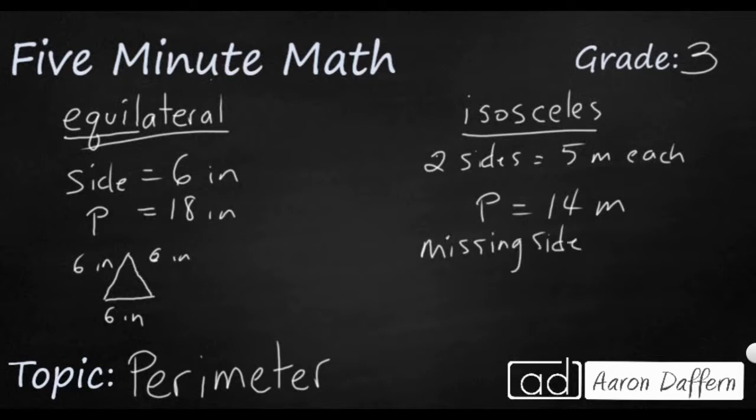Well, this comes back to what we know about the isosceles triangle. Look at this, SOS, same, other, same. So an isosceles triangle has two sides that are the exact same length, and then the other one is the one that's different. So the two sides, that means these two are the identical ones. That's five meters and five meters.